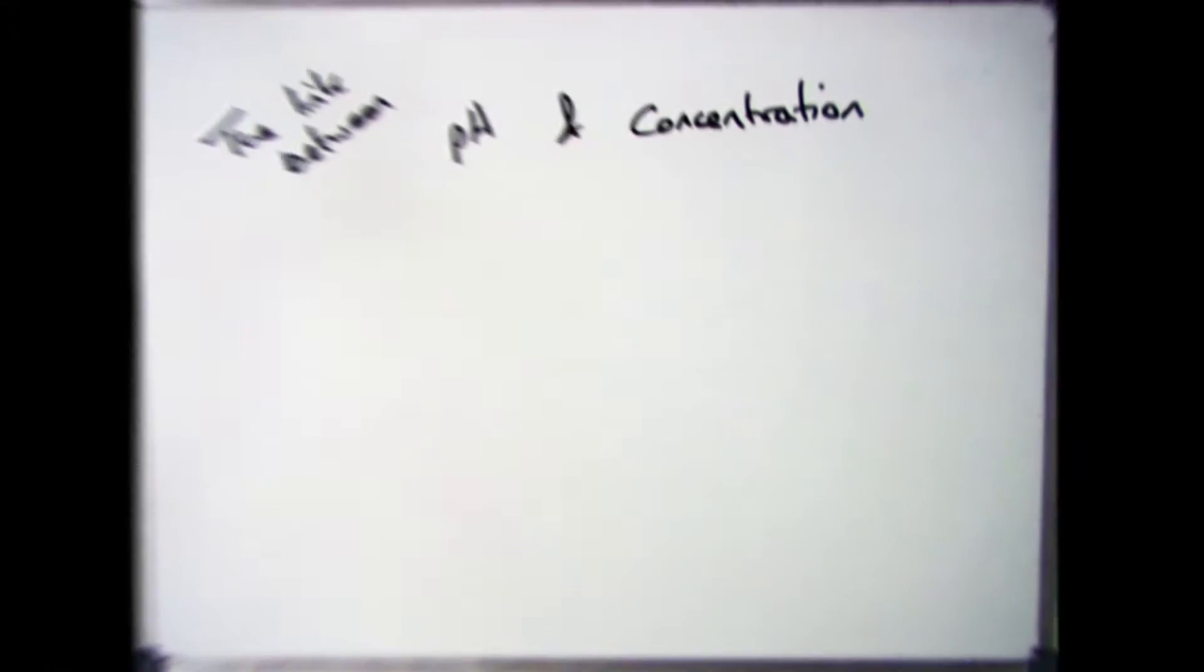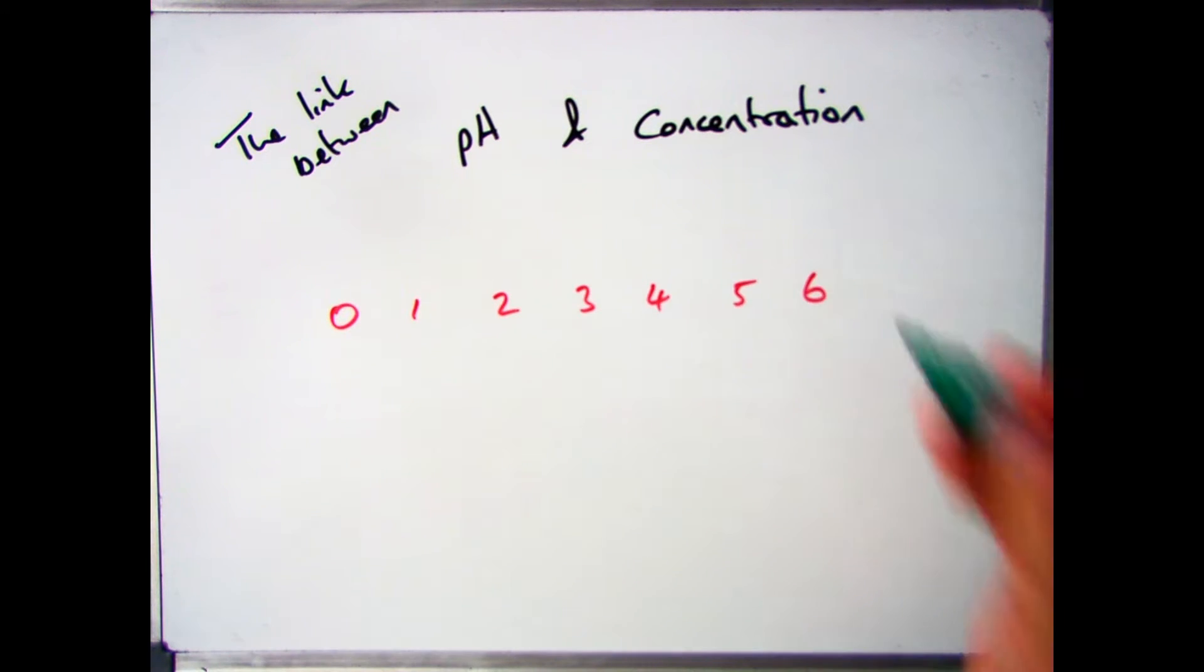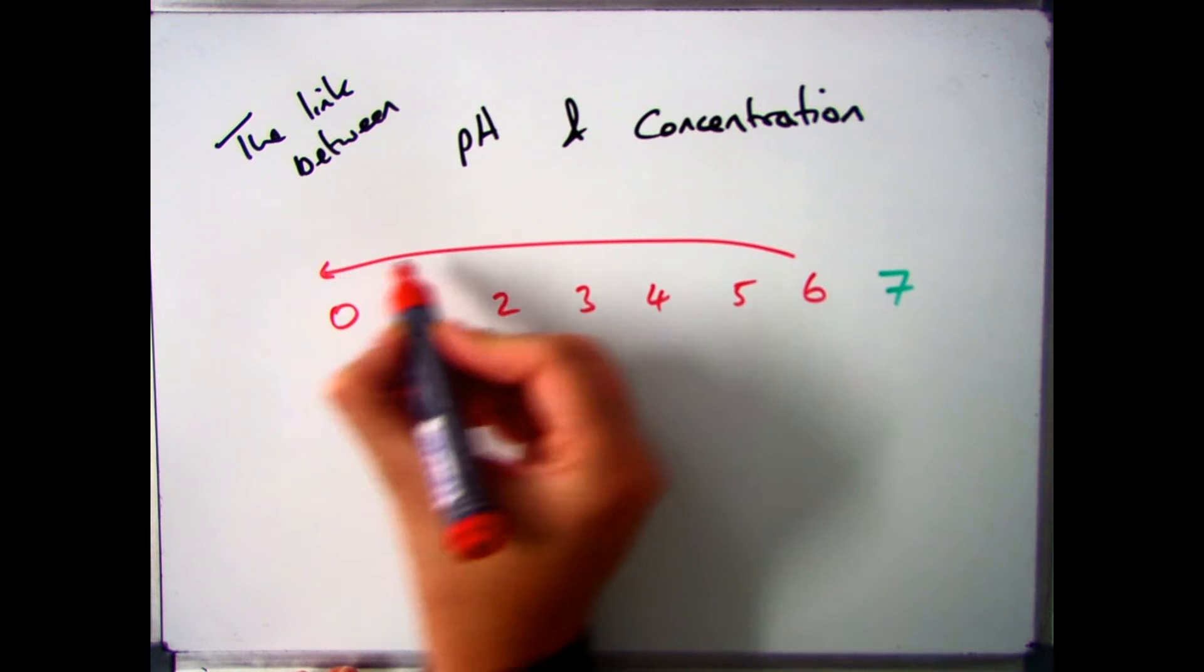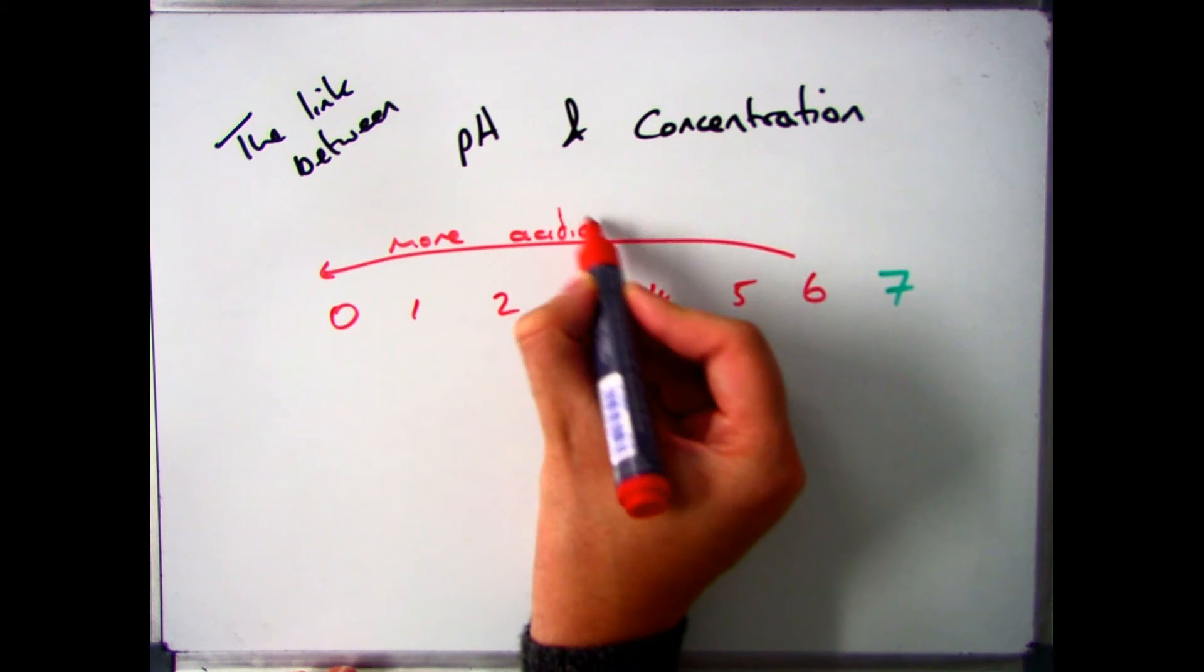Hi guys, welcome to this video which is going to have a look at the calculations that prove that concentration and pH are linked. So for this part of the video, you only need to know about acids, and as you know, as you go from pH 7 down to pH 0, it becomes more acidic.